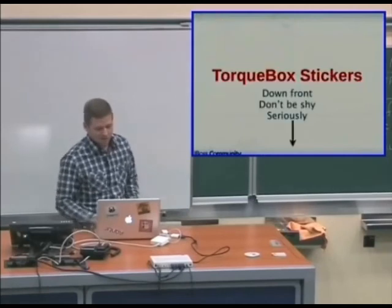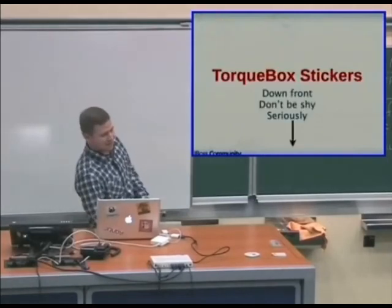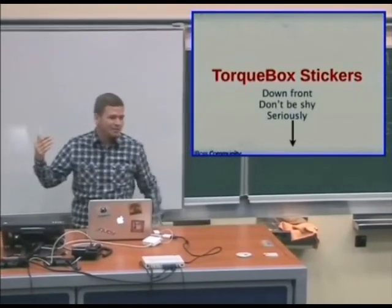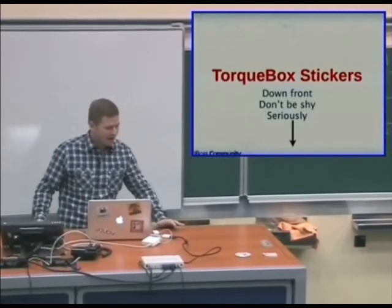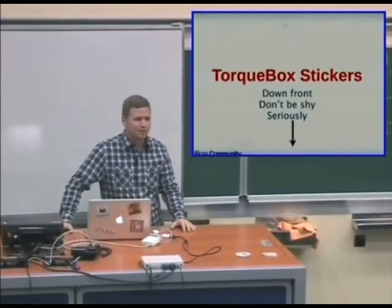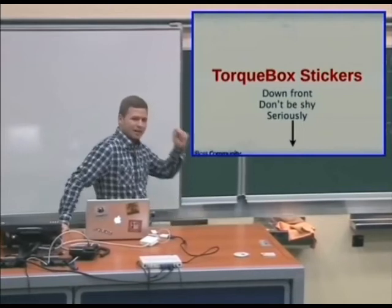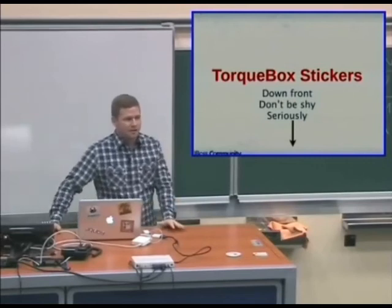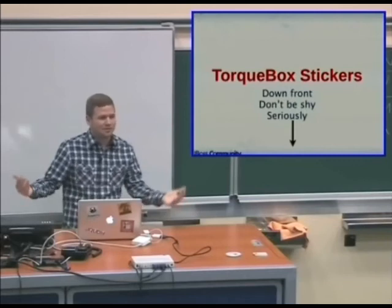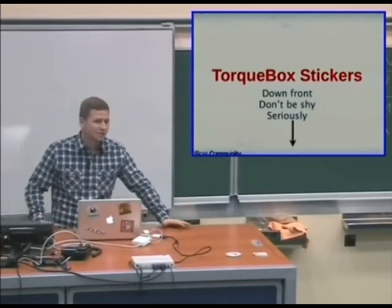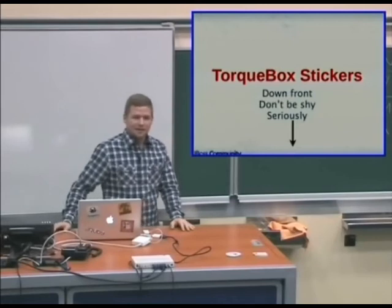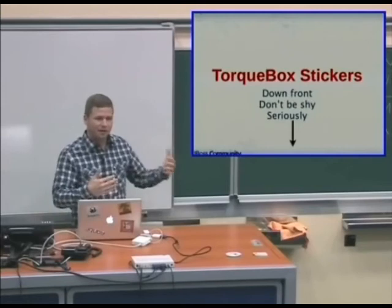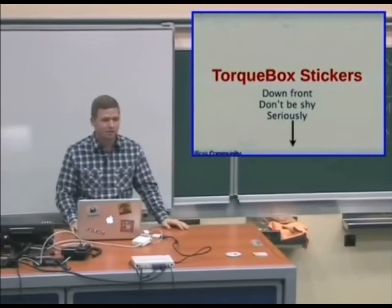I have TorqueBox stickers down front and at the Red Hat table. I also have some Immutant stickers. Everything I just showed you about TorqueBox is Ruby on JBoss Application Server. Immutant is Clojure on JBoss Application Server. If you're interested in Clojure, come talk to me — it's basically the exact same thing as TorqueBox but for Clojure, and they were talking at Clojure Conj this weekend.